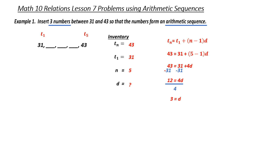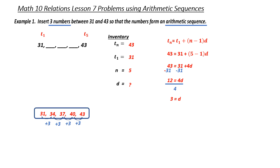I now have enough information to answer the question. My first number was 31. Adding a common difference of 3 gives me 34. Adding 3 again gives me 37. Adding 3 again gives me 40. If I've done this right, I should be able to add my final 3 and get my fifth term — and that is correct. Therefore, my answer is 34, 37, and 40 are the three numbers to insert.